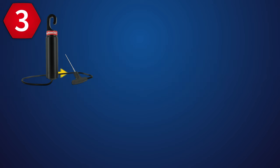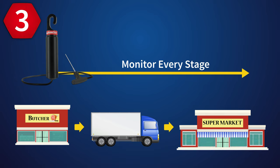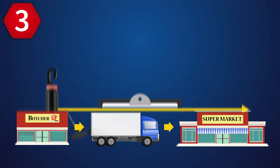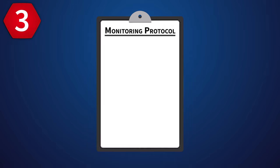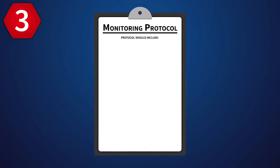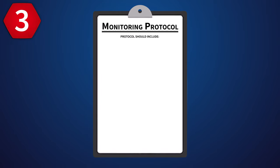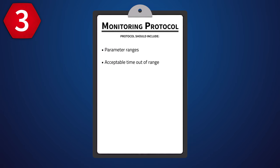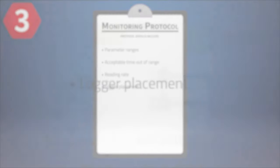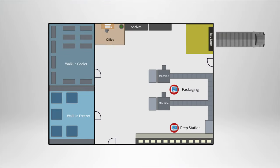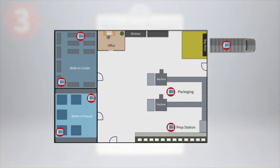Data loggers can record the temperature and humidity through all steps of shipping and processing. As part of the HACCP plan, a data monitoring protocol should be created, outlining all aspects of data collection. This document should define the acceptable range of temperature and humidity levels, as well as how long it is acceptable to remain at certain levels. Another aspect to note is the rate at which the data logger will collect the readings. Then, determine the areas in which data loggers should be placed. Loggers should be placed at all critical control points, cooler and storage facilities, and in all other areas food or beverages are processed.